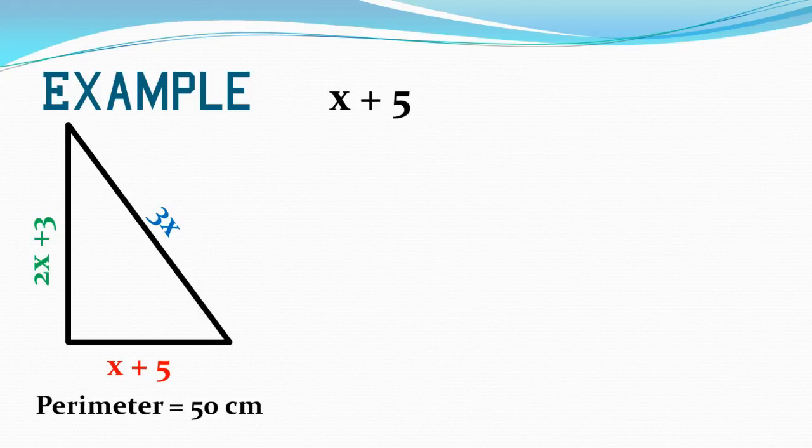So x plus 5, 2x plus 3, and 3x all added together. This makes one big algebraic expression that represents the distance or the perimeter all the way around this triangle. If I know that in centimeters that perimeter is 50, I now have a multi-step equation.